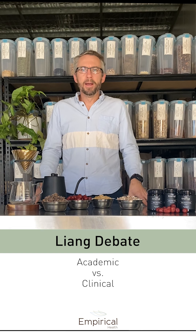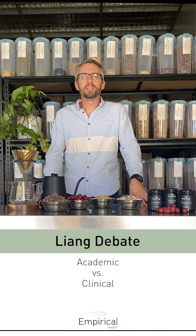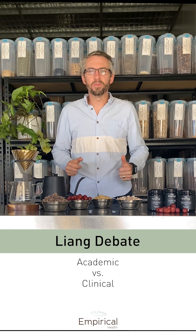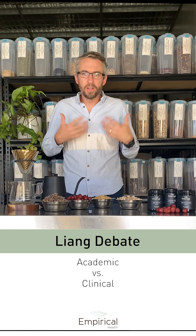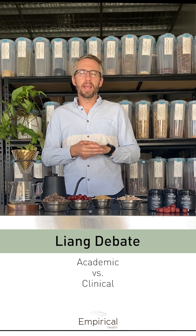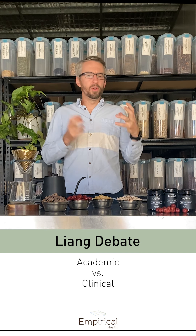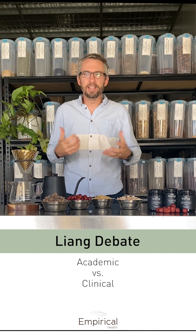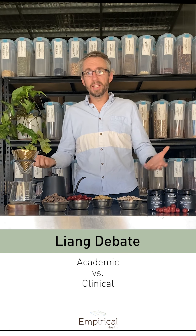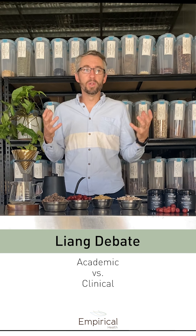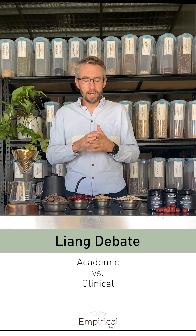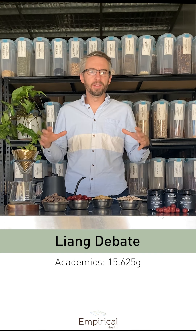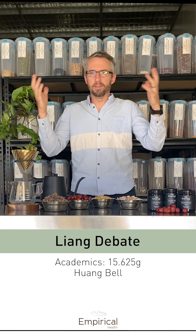So I started thinking about this 15.625 grams figure and researching as much as possible — collaborating with colleagues around the world and in Australia — trying to figure out what these measurements actually referred to. I went to museums in Taiwan and China, looked at old bells and pitch pipes and weight measurements, tried to buy antique objects from eBay and Amazon, and found pictures of these things. This research led to some really cool corroborating information, which all came back to something called a Huang Bell.